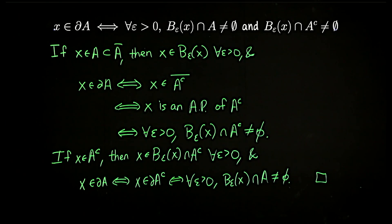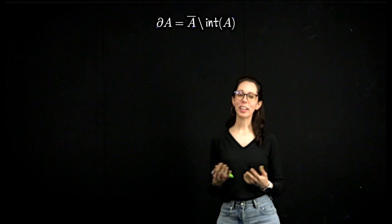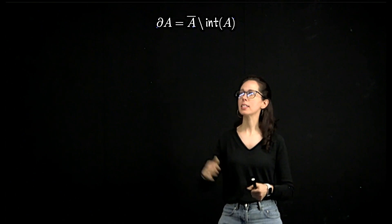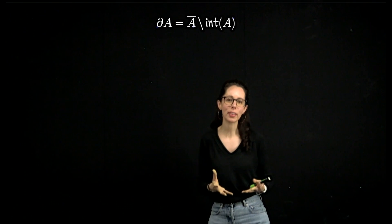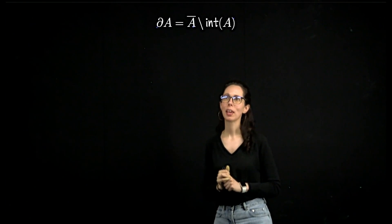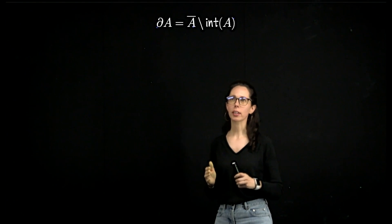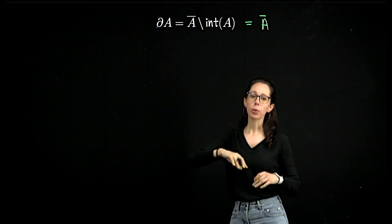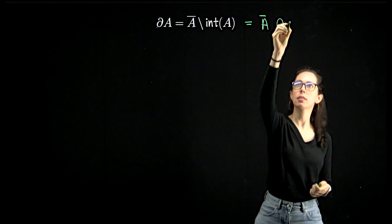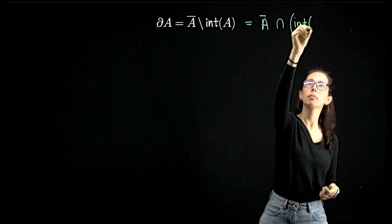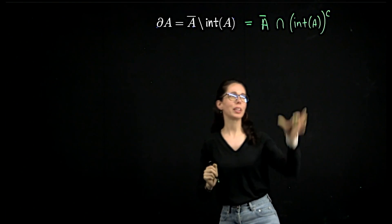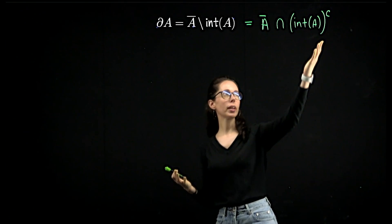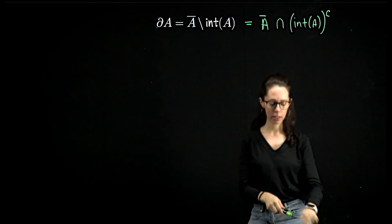Let's look at one more alternative characterization. The boundary of a set is the closure of the set minus the interior — kind of leaving you with what's on the edge. To prove this, we start by recognizing that the closure of A minus a set is equivalent to the closure of A intersected with the complement of that set — in this case, the complement of the interior of A. This looks a lot like the actual definition of boundary; it's just a recharacterization of the second set in that definition.